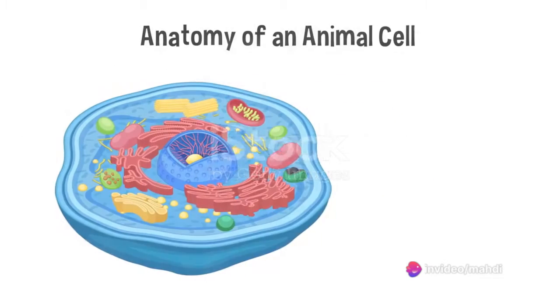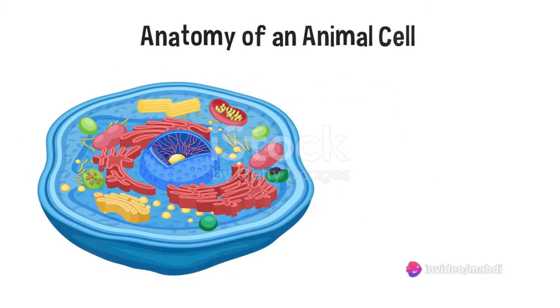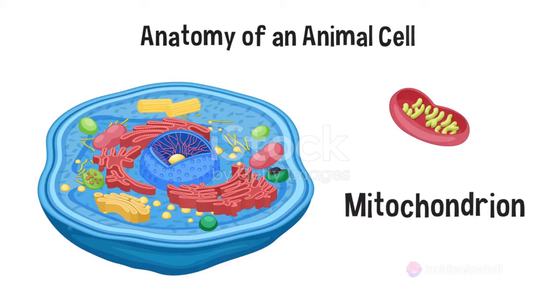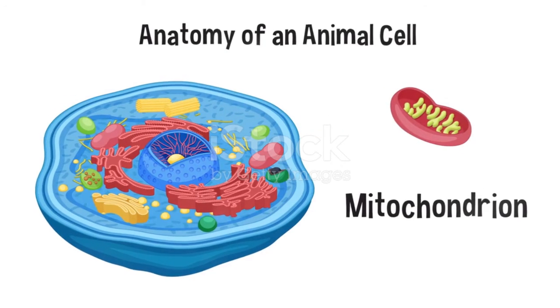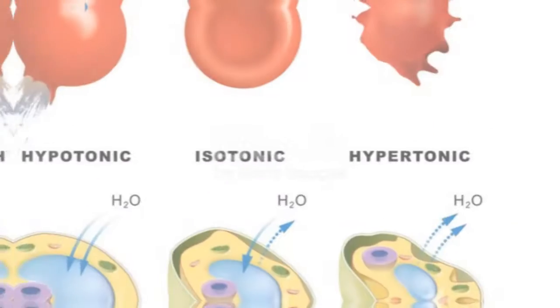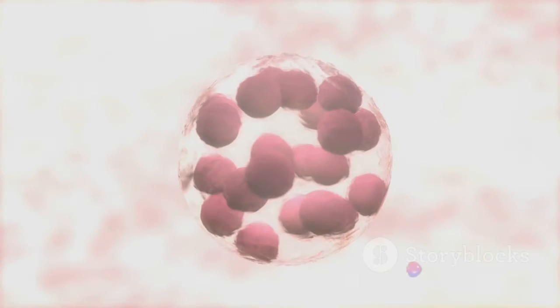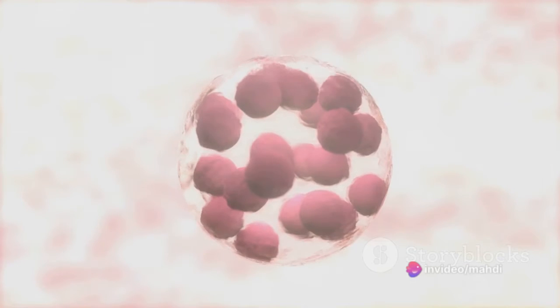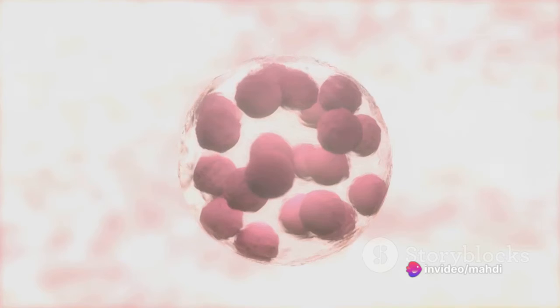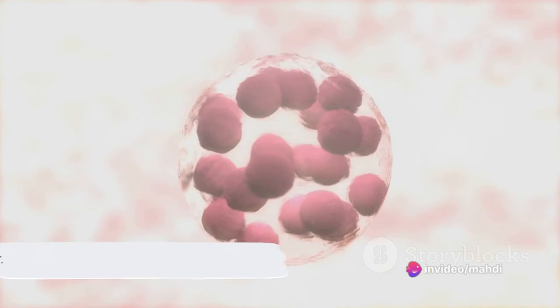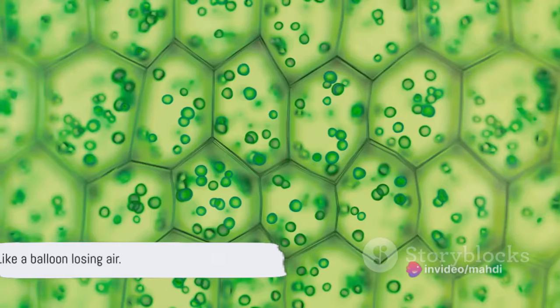The behavior of osmosis can differ between plant cells and animal cells when placed in various solutions. If we place an animal cell in a hypertonic solution — where the surrounding solution has a lower concentration of water than the cell — the cell will lose water and shrink. It's like a balloon losing air.